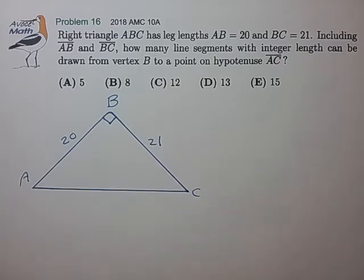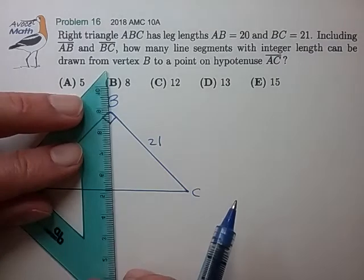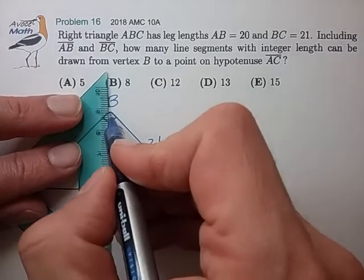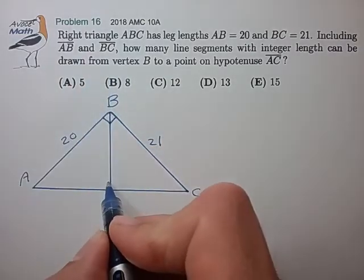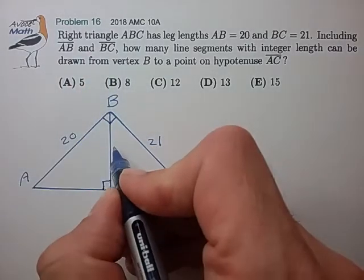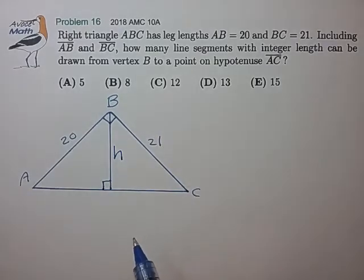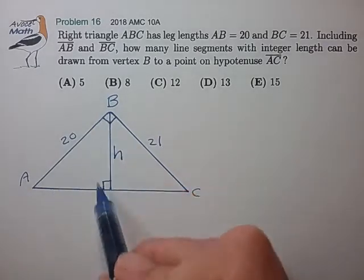So it looks like it'd be very helpful to figure out what the distance is from B to line segment AC. So this altitude is going to be a lower bound on the length of the segments that we need to consider.